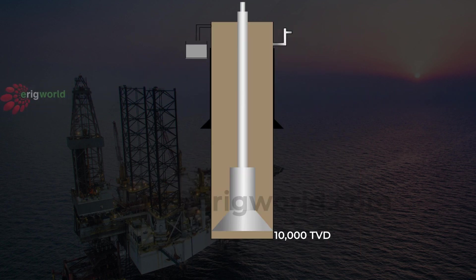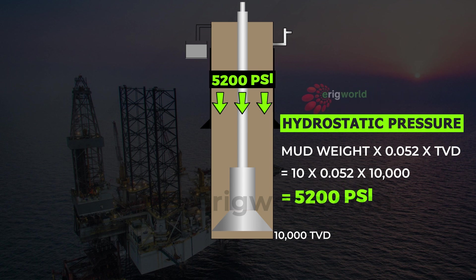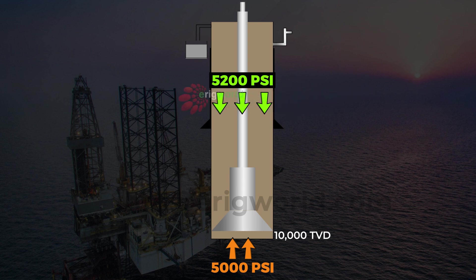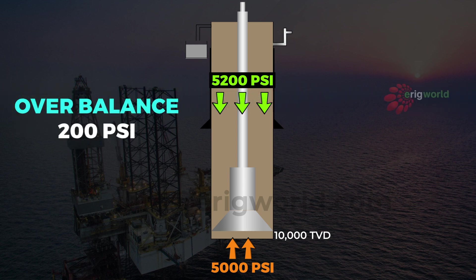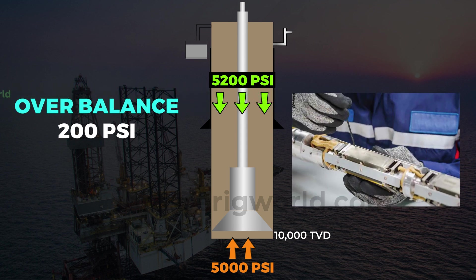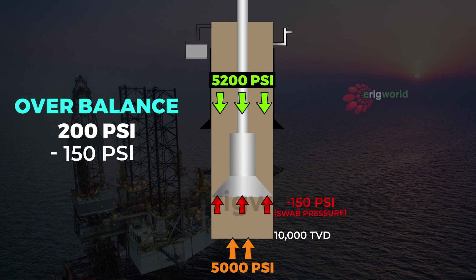In this well, the hydrostatic pressure exerted by 10 ppg mud acting downwards is 5200 psi, and the formation pressure is 5000 psi, giving an overbalance of 200 psi. Whenever we lift our string, if we have an MWD tool in our string, it will give us data regarding how much the pressure drops below the bit. Let's say during upward movement of the string there is a drop of 150 psi.